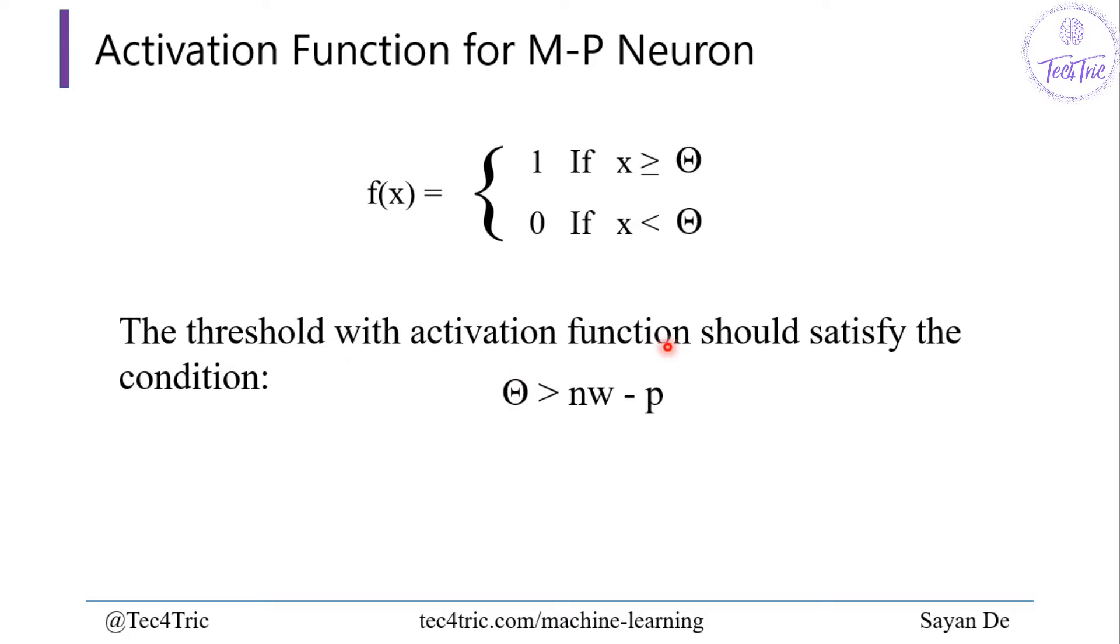The threshold with the activation function should satisfy the condition: θ is greater than n times w minus p. Theta should be greater than the number of inputs (n) times the positive weight (w) for the particular neuron minus p for the negative weights.